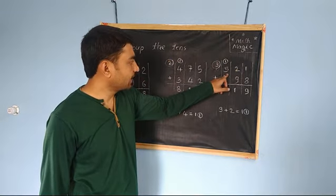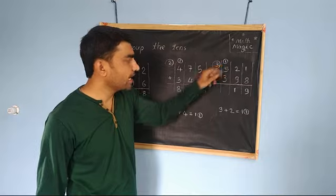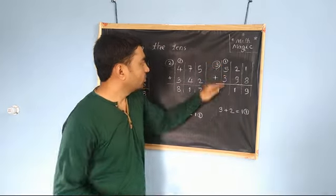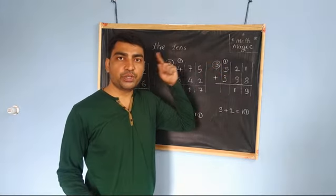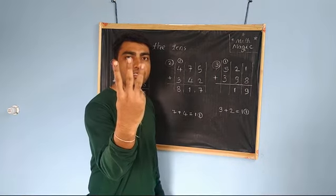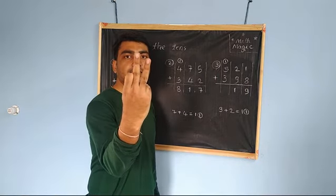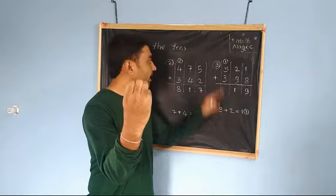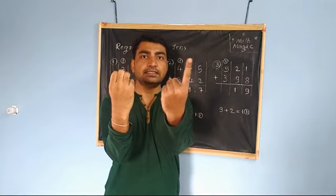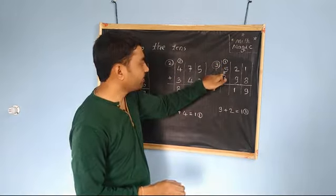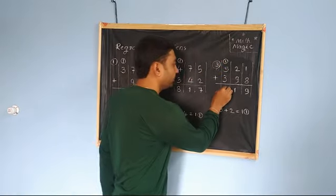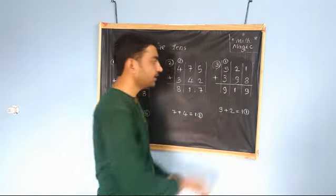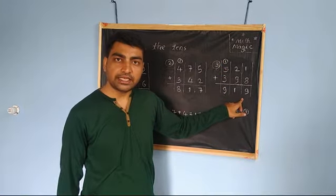Let's add these numbers. We have 5, 3, and 1 to add. So 5 is the biggest number that we are going to keep in our mind. Let's take 3 fingers. After 5, there is 6, 7, 8. And the 1 carry, that is 9. So 5 plus 3 plus 1 is 9. And the answer is 919.